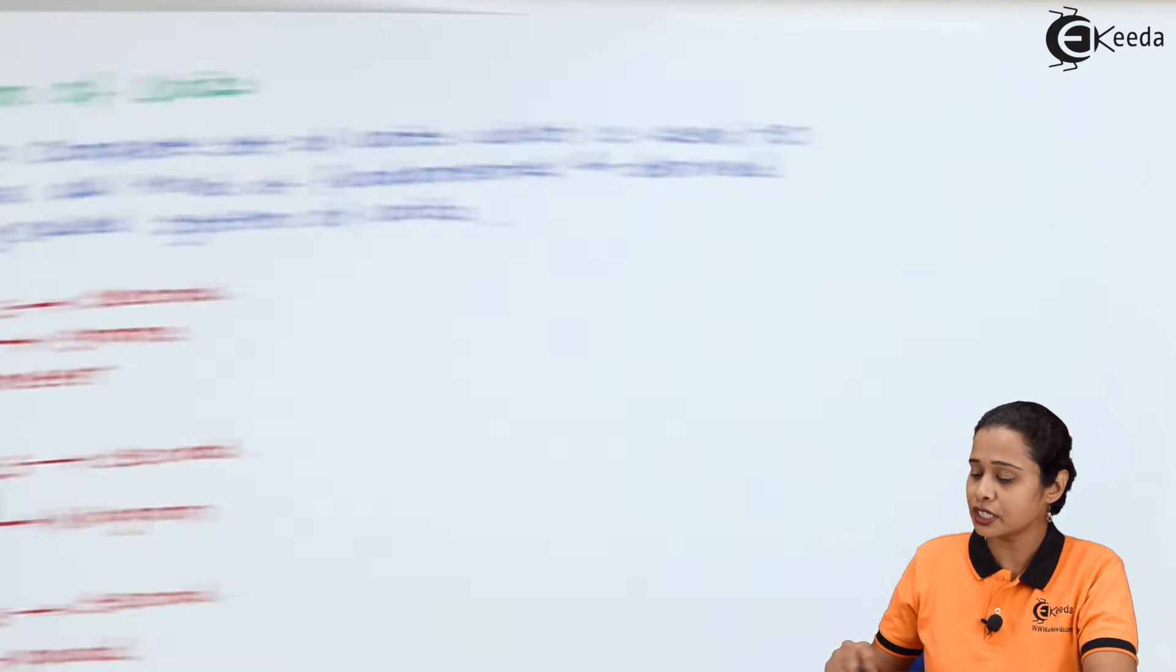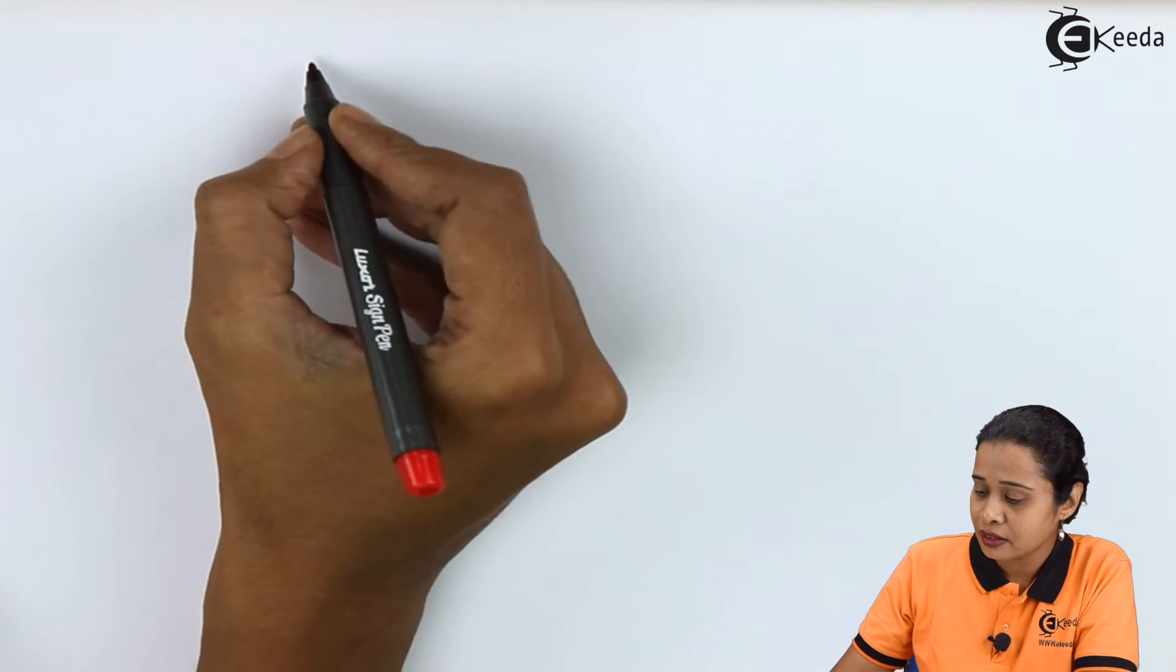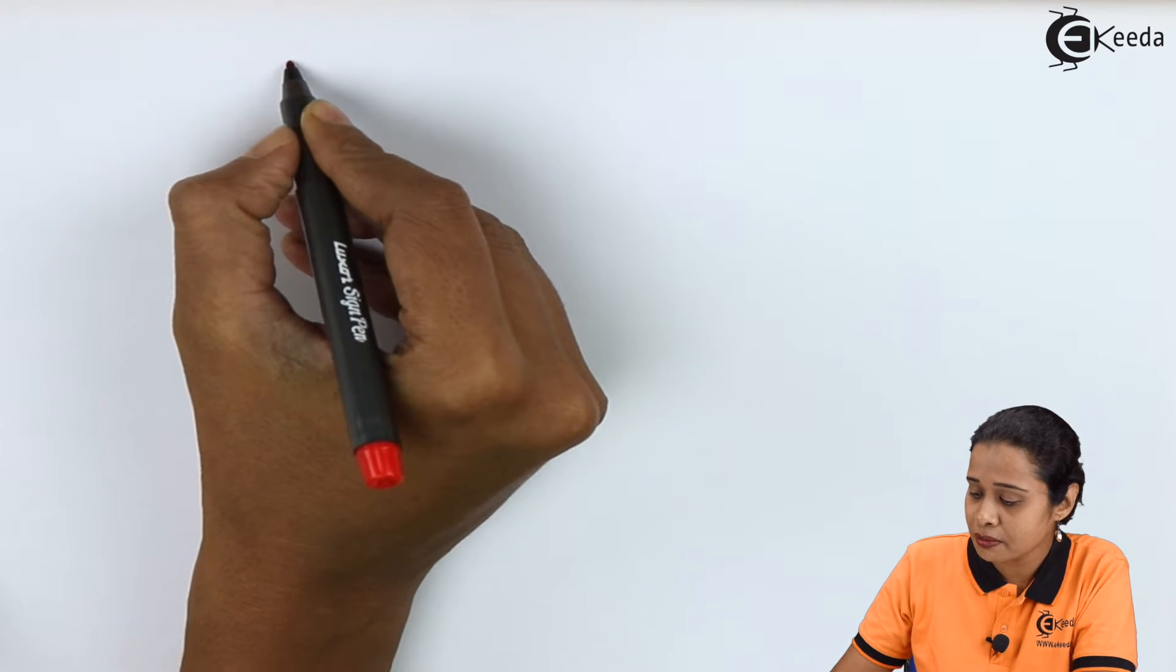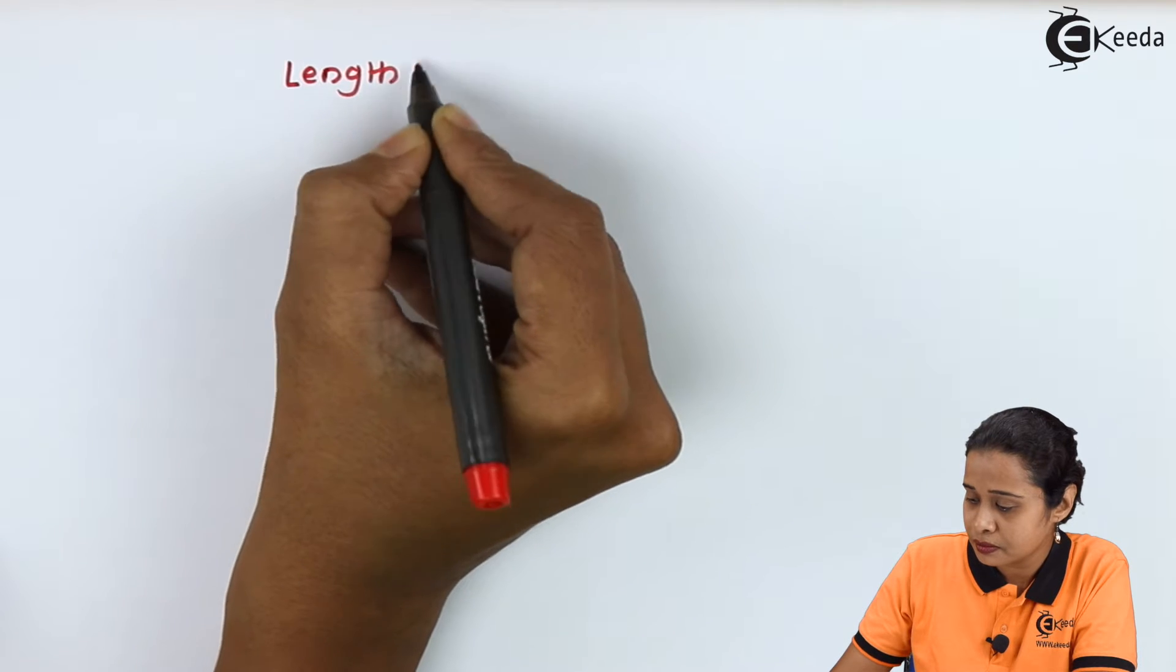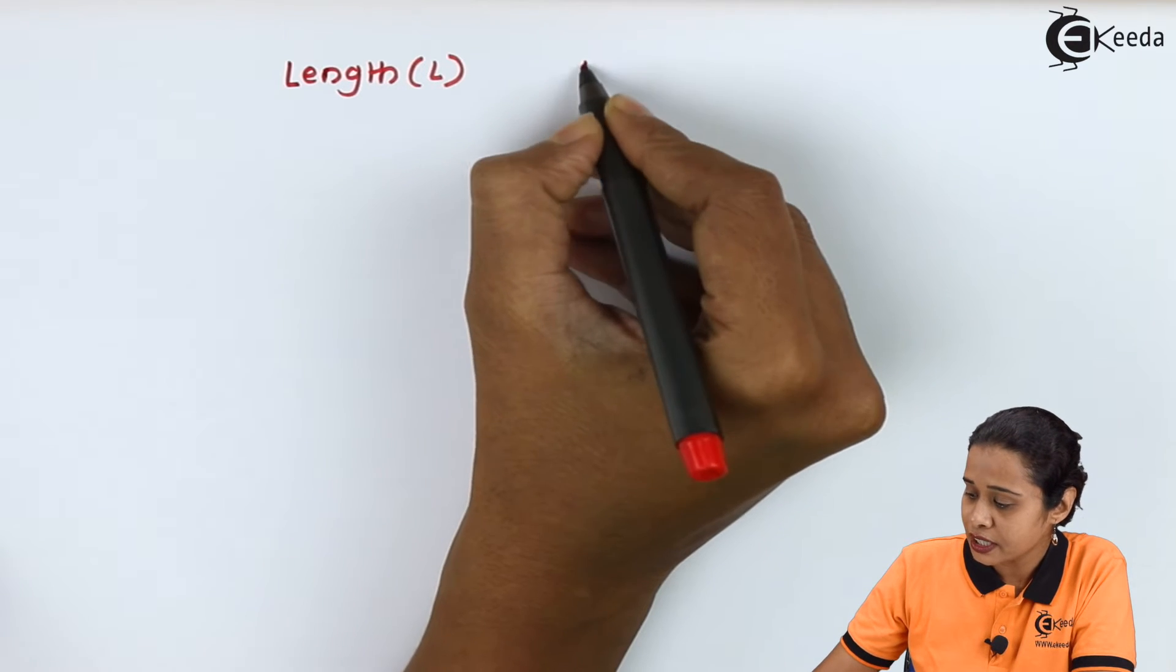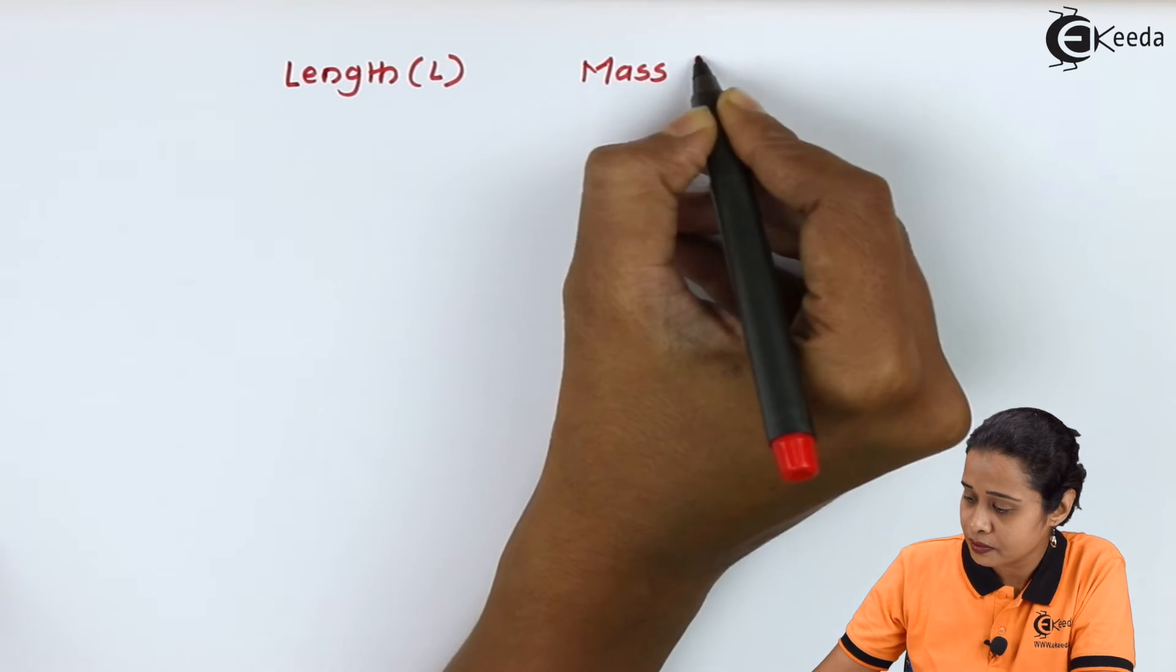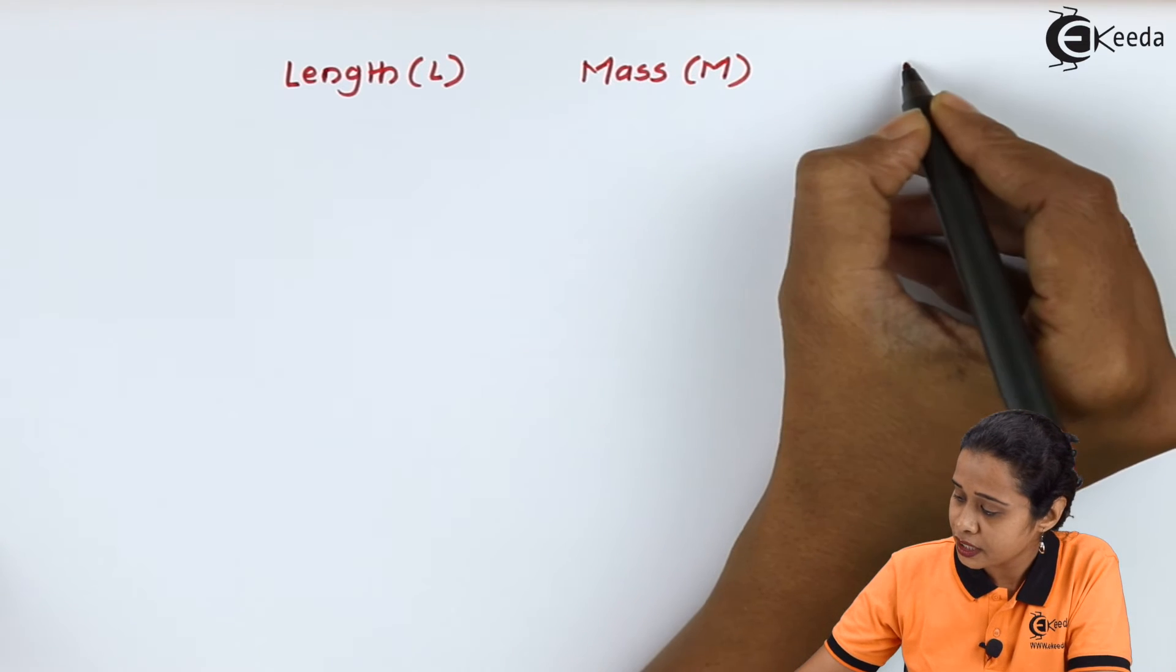So if you want to just write down this, let us start the comparison of this three system. Suppose we have a three fundamental quantity. First one is a length. Second one is mass. And third one is time.